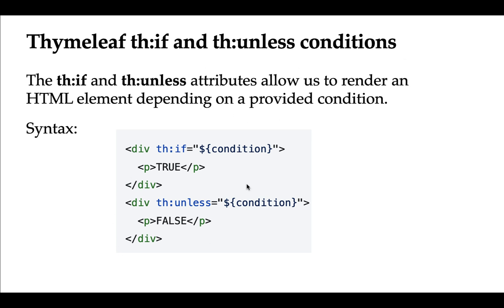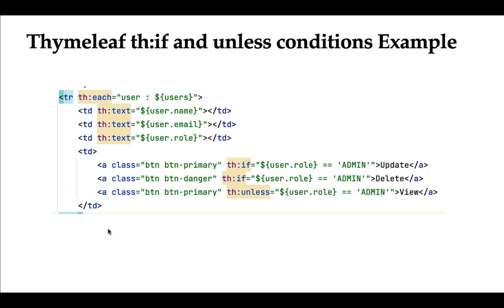Looking at the syntax: th:if takes a condition — if the condition is true it will render the element, otherwise it won't. th:unless is basically the negation of th:if, meaning th:unless is the opposite of th:if.